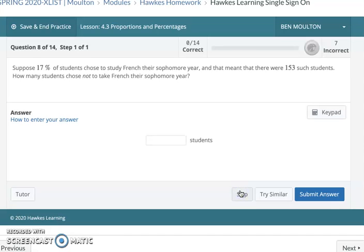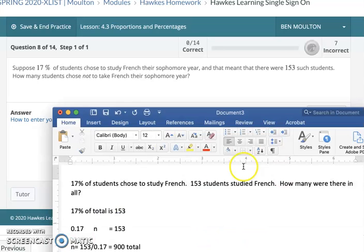Suppose 17% of students chose to study French their sophomore year, and that means there were 153 such students. How many students chose not to take French their sophomore year? I think this is the one that might be a little bit tricky. I went ahead and did the footwork here. Another way of looking at this is 17% of the students chose to study French. Since 153 students studied French, the first thing we need to do is figure out how many there were in all.